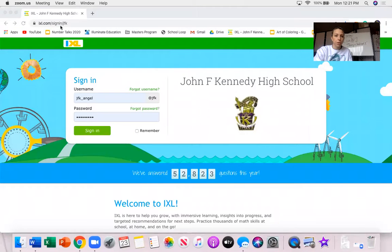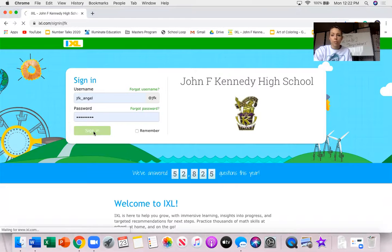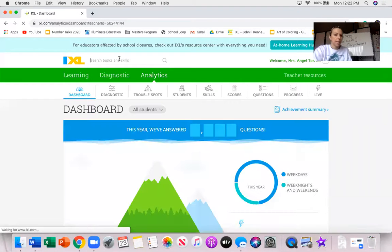Here's my screen. I start by going to IXL.com backslash sign in backslash JFK. That's my username and password and I sign in. Now my screen looks a little bit different than yours does when you're doing your sign in but the idea is just the same.